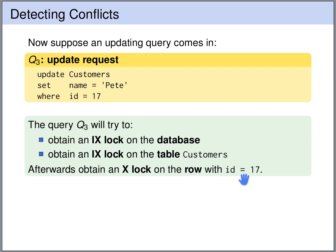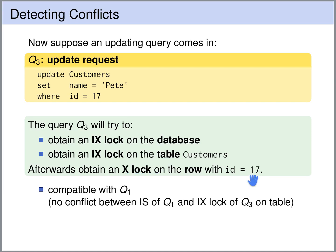Let's determine how query 3 conflicts with queries 1 and 2. Query 1 obtained an intention shared lock on the database and an intention shared lock on the table customers before obtaining a shared lock on row 42. The intention shared lock on the database does not conflict with the intention exclusive lock on the database by query 3, because intention locks do not conflict. Likewise, the intention shared on the table does not conflict with the intention exclusive on the table. On the row level, the queries do not conflict because query 1 locks row 42 and query 3 locks row 17 — so query 1 and query 3 are compatible.